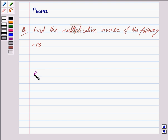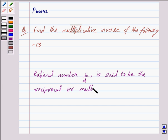Now, a rational number c/d is said to be the reciprocal or we can say the multiplicative inverse of the rational number a/b if a/b × c/d = 1. So this is the key idea behind our question.